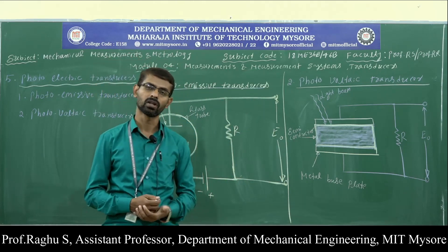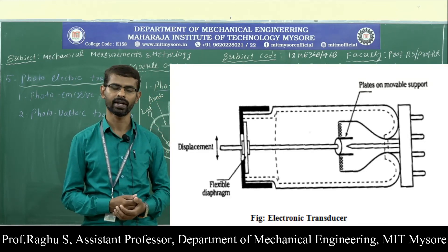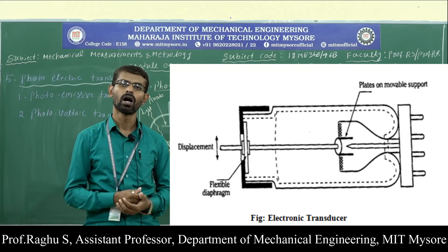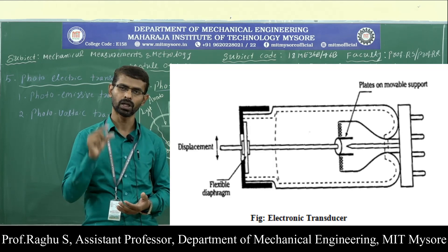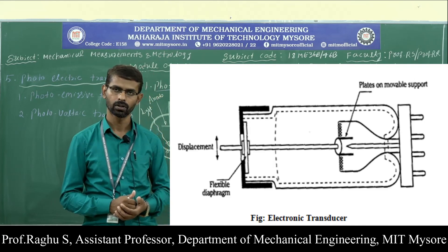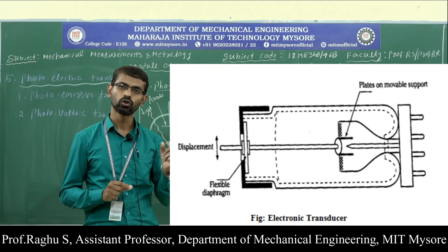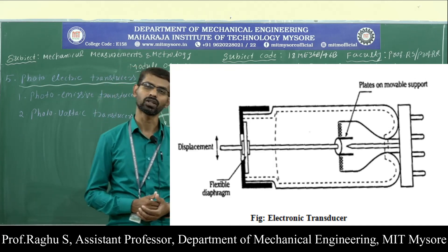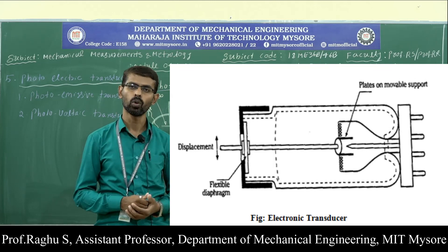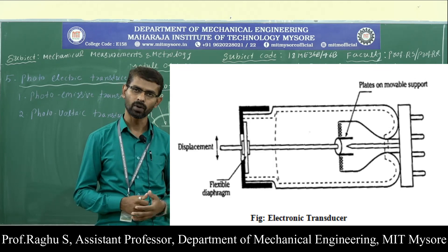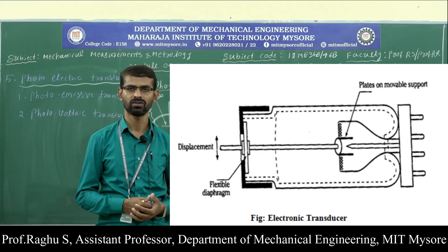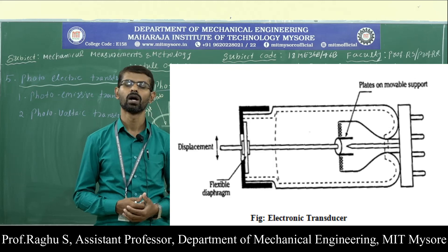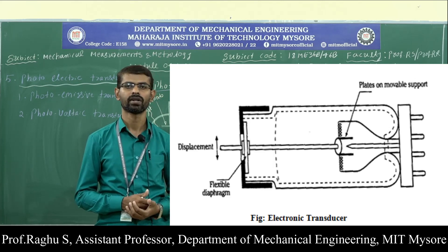Next, we discuss the working of the electronic transducer. It consists of an electronic tube containing two plates placed on a movable arm. The movable arm extends through a diaphragm at one end. When mechanical displacement is applied at one end, movement of the arm takes place. Due to this movement, the electronic characteristics of the tube change. The change in electronic characteristics of the tube can be taken as the measurement of the mechanical displacement. This is the working of the electronic transducer.